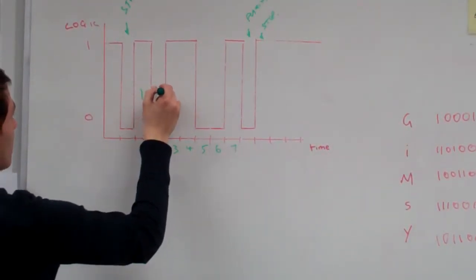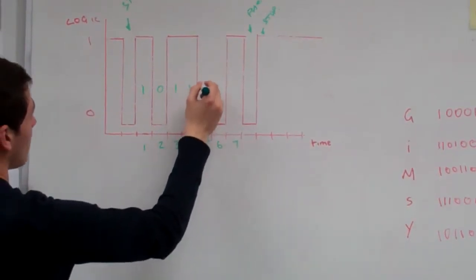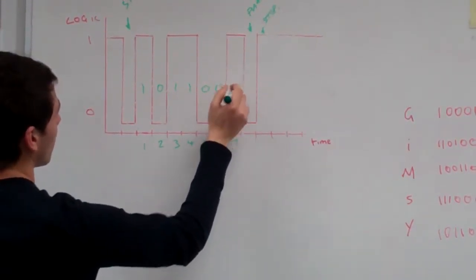So we know that's logic 1, that's 0, that's 1, 1, 0, 0, 1.